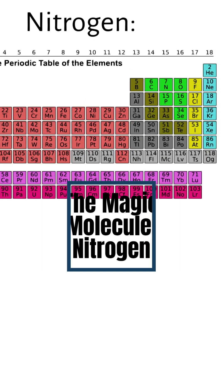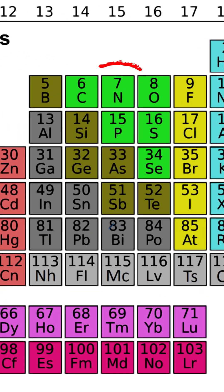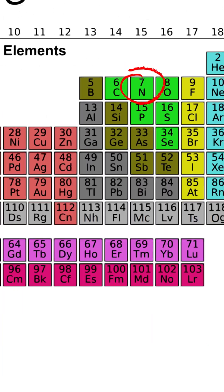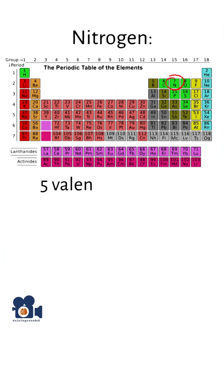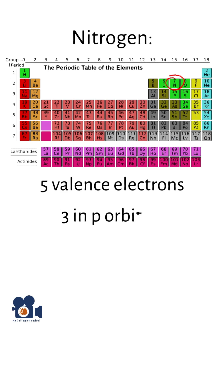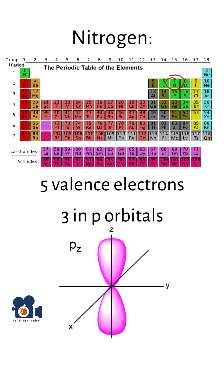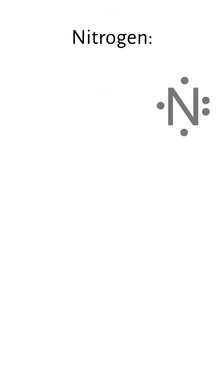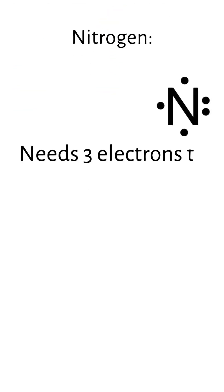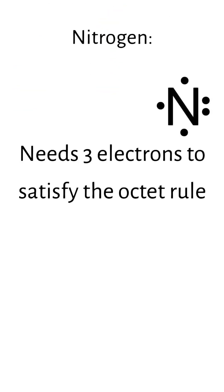Nitrogen is a chemical element with the symbol N, atomic number 7, and 5 valence electrons, three of which are in p orbitals. Nitrogen, therefore, needs three more electrons to satisfy the octet rule,